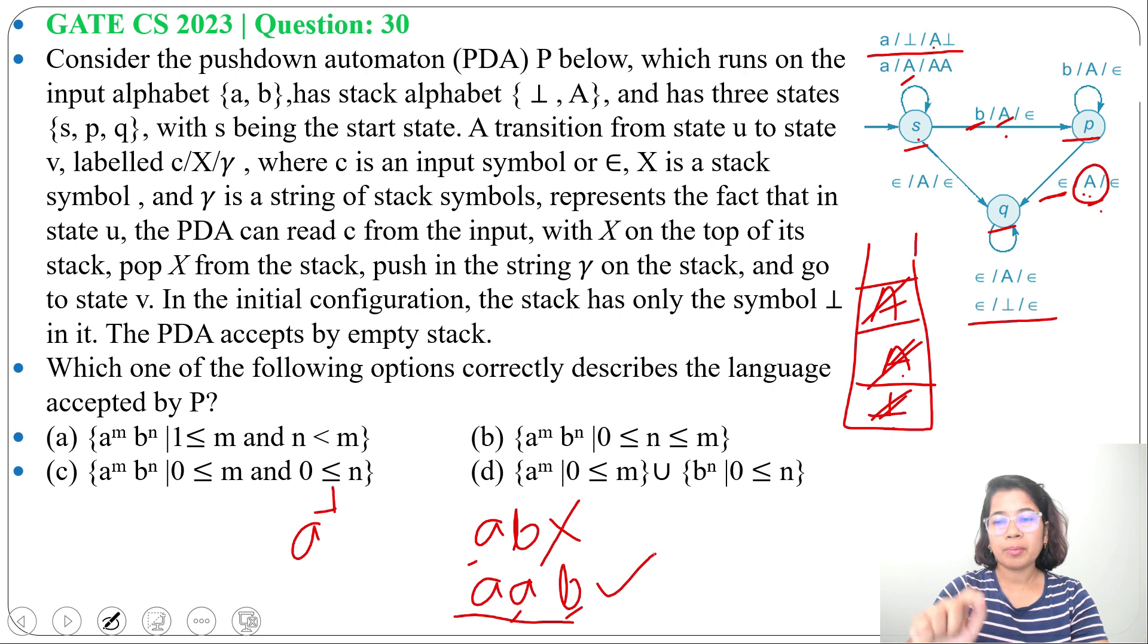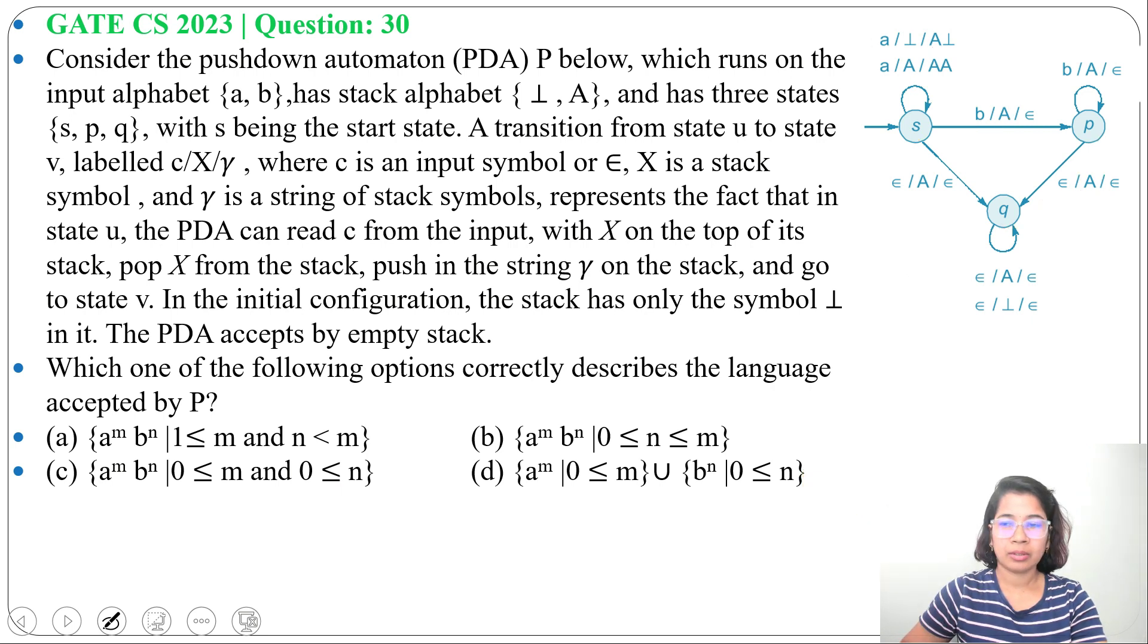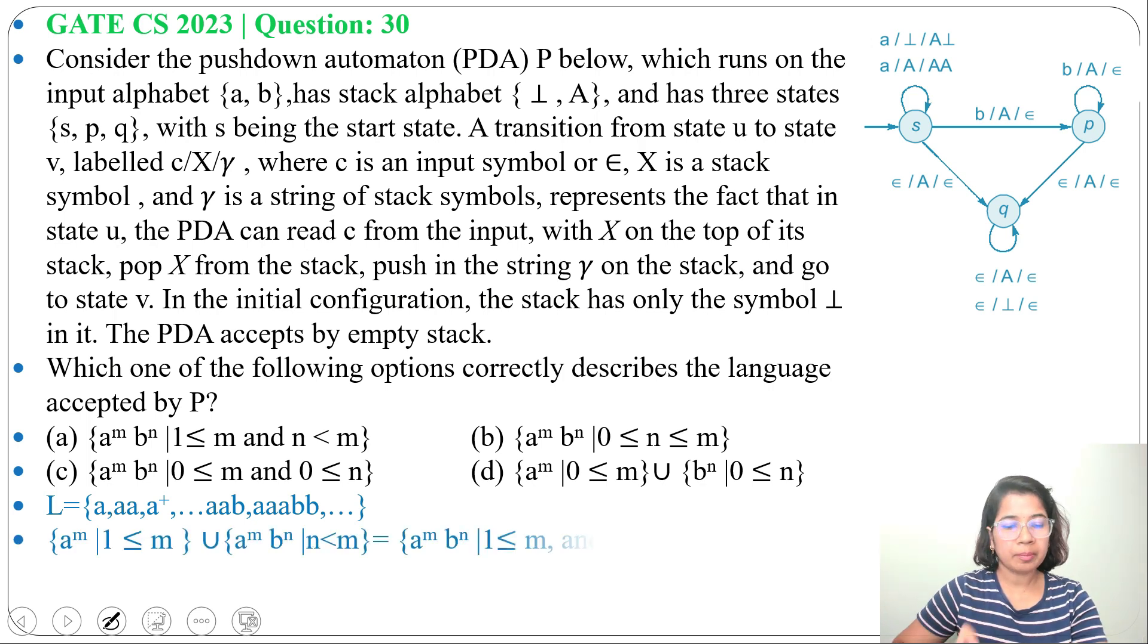So number of A should be greater than number of B. It can accept 3A B, 4A 3B like this. So it accepts any number of A followed by any number of B, but number of A should be greater than number of B.